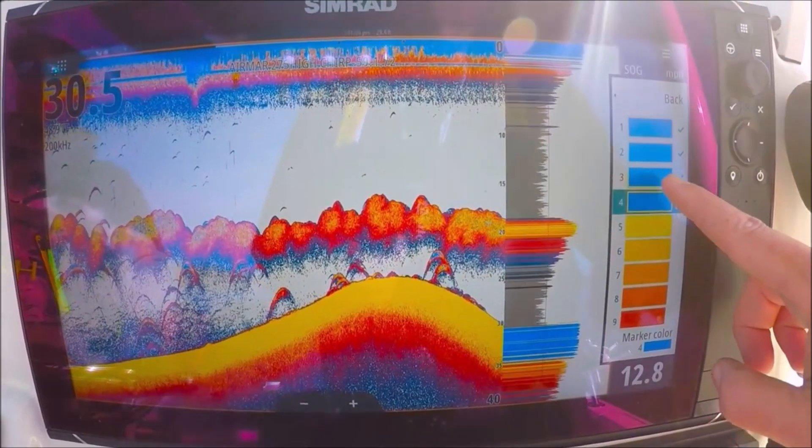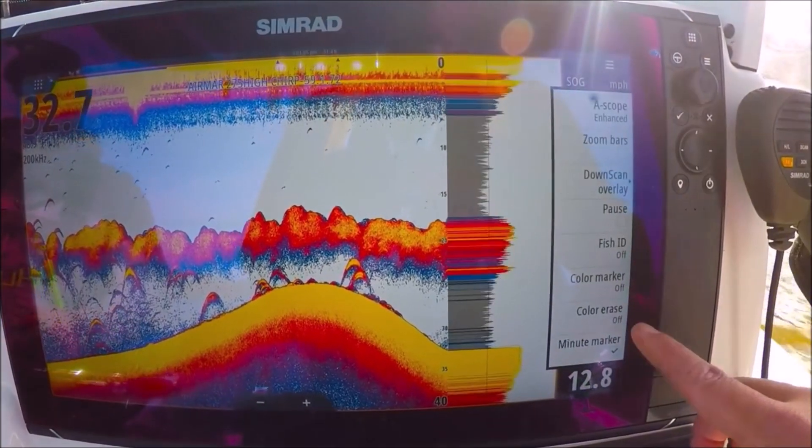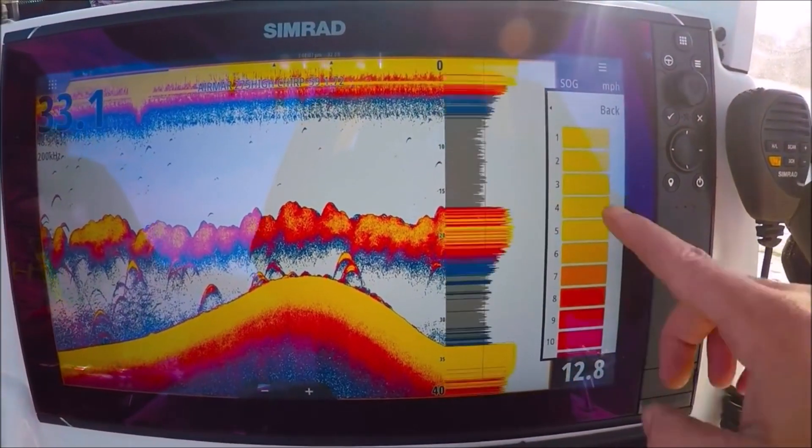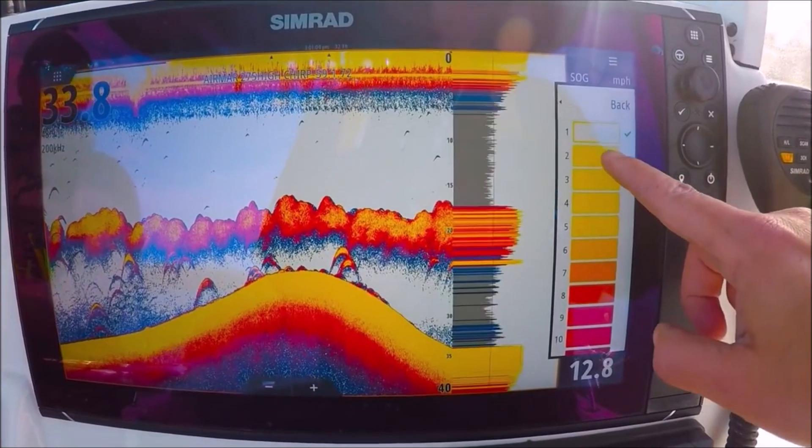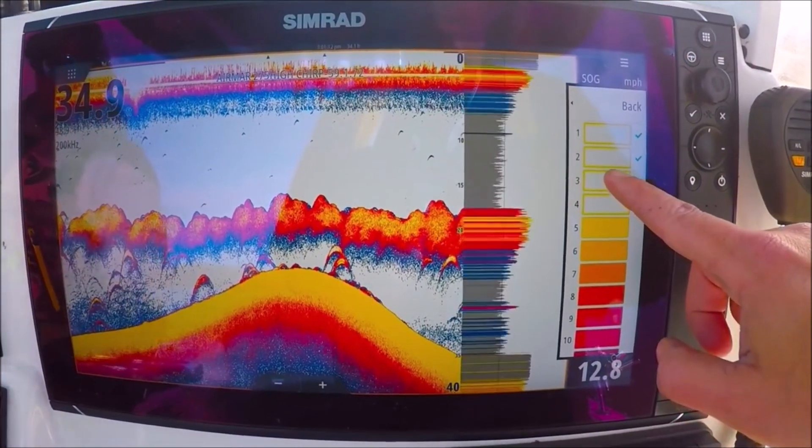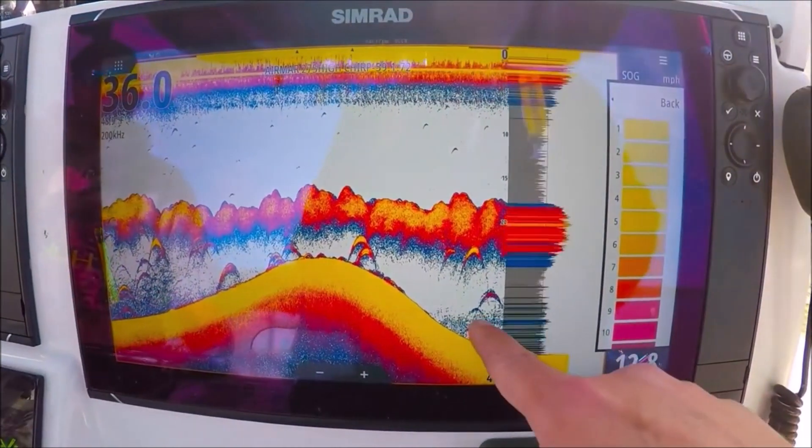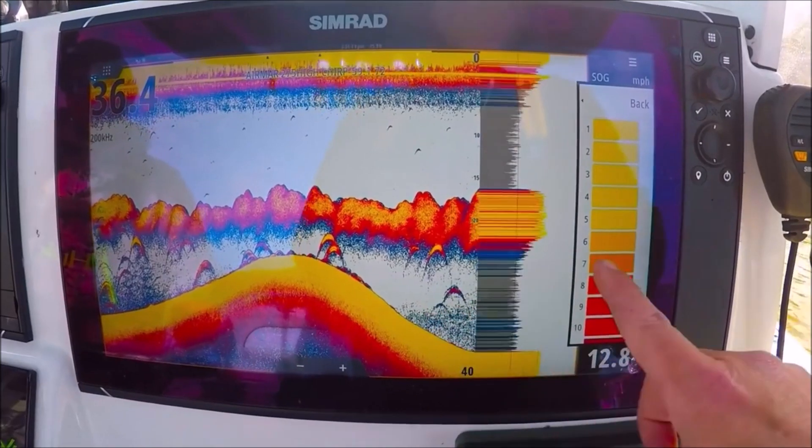You go ahead and put those back. Color erase. It lets us remove any color from the palette, so we can remove the yellows if we want. This is really nice if you're marking a thermocline. Actually in this situation, you can see the heavier water in blue down here. We can remove that if we want. Come down here and find our blues.